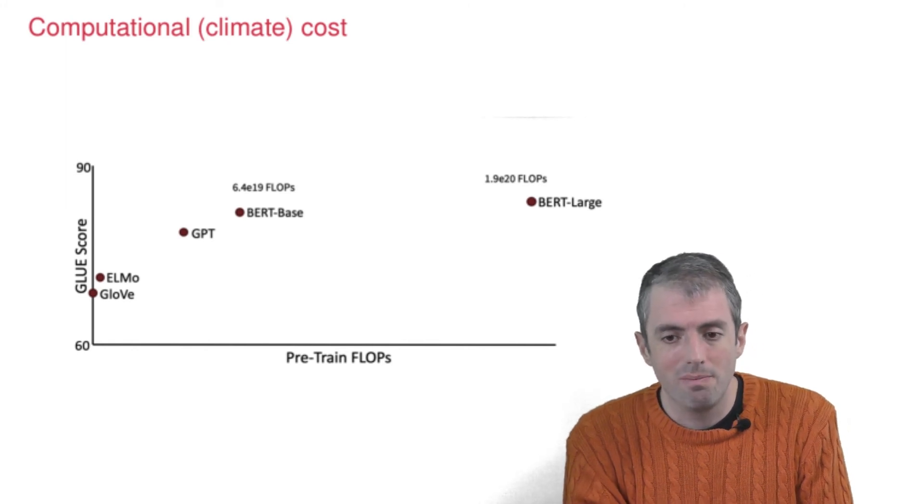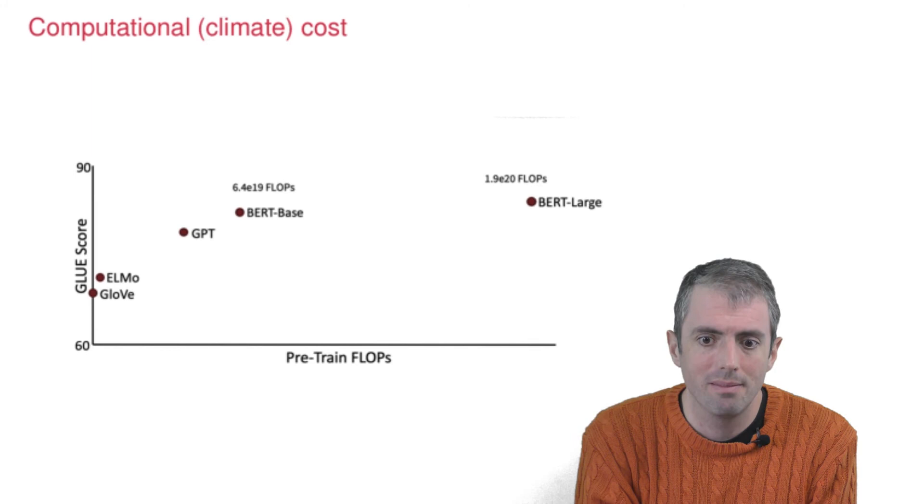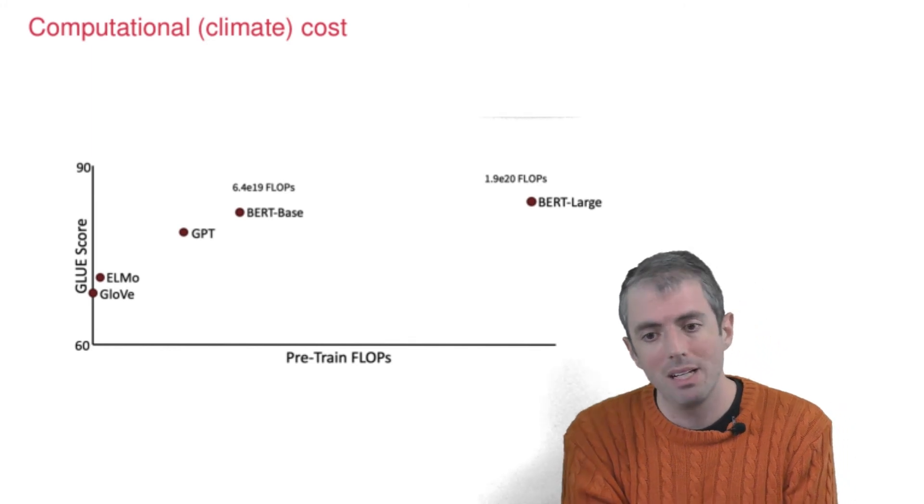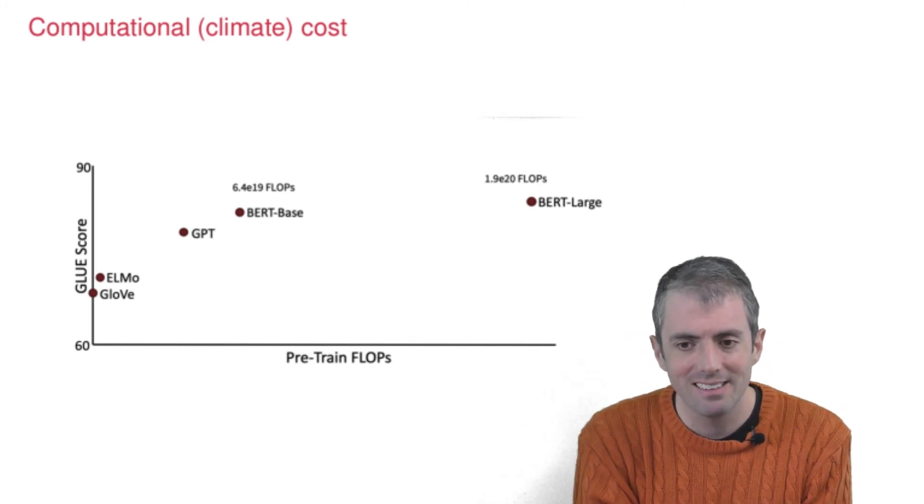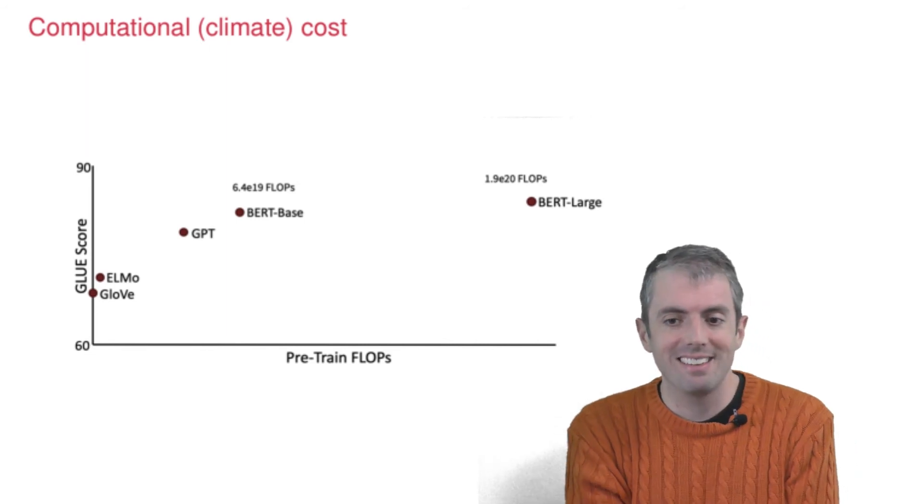And it looks like you have a big jump from ELMO to these big neural language models. And that's true. And you pay a little bit of a computational cost. So this was about five years ago. And fantastic. We're doing much better on these tasks. And things progressed in the last half decade.